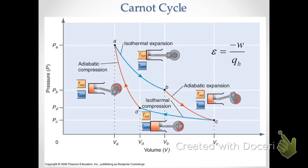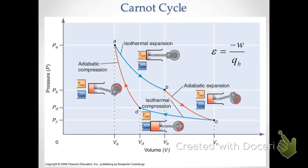We define efficiency as negative W divided by the amount of energy we're putting into the system — that is, the heat Q_H dumped into the system in the first step. It's interesting to note that negative W, which represents the work we get out of the system, is equivalent to the area enclosed by the cycle — specifically, the area enclosed by the pressure-volume curves, which equals negative W.